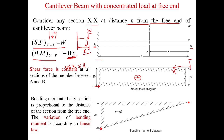We can observe that the shear force is constant throughout the length of the beam, but the bending moment increases linearly from the free end and is maximum at the fixed end. This is also the reason why cantilever beams always have a tendency to break from the fixed end.